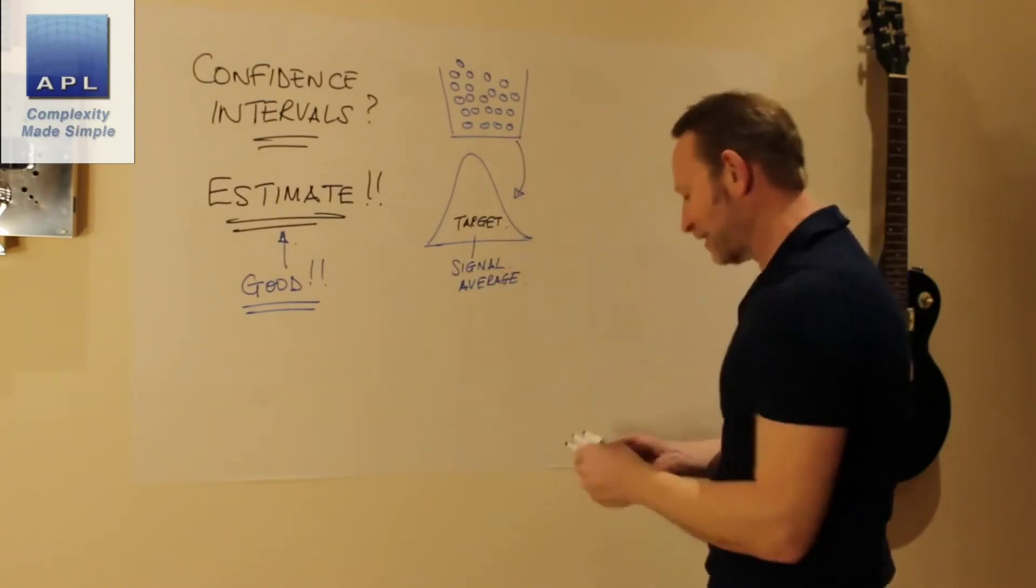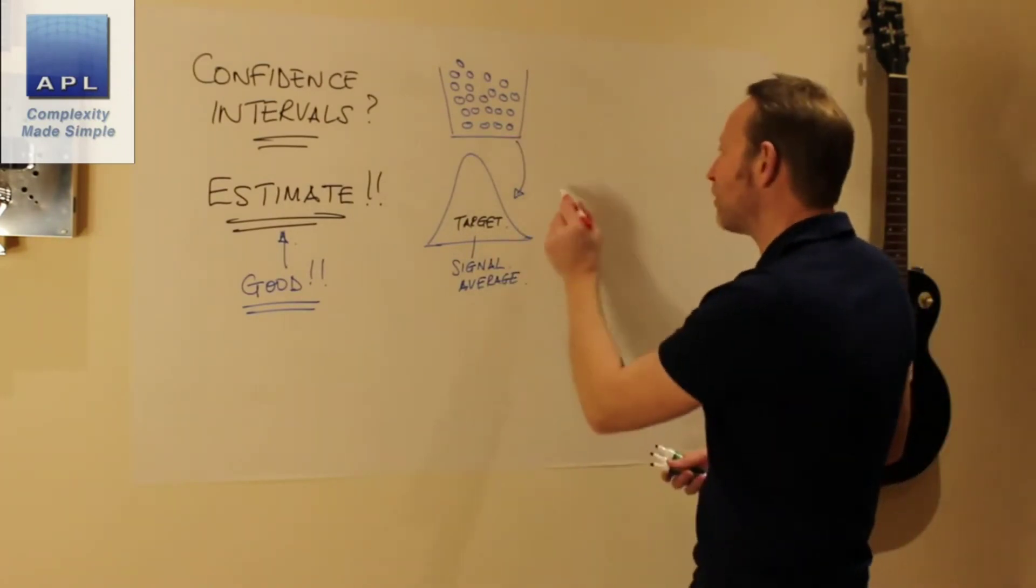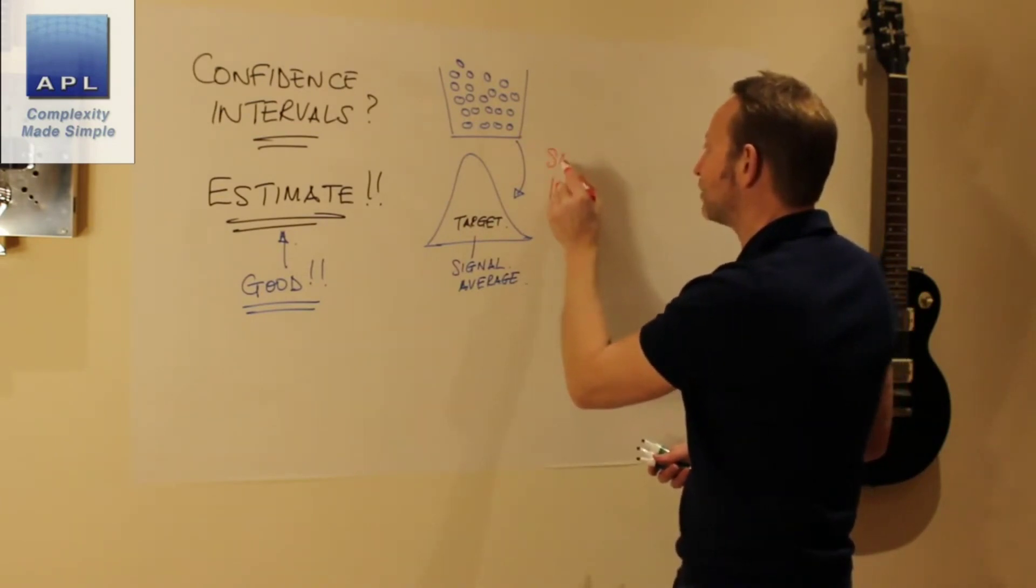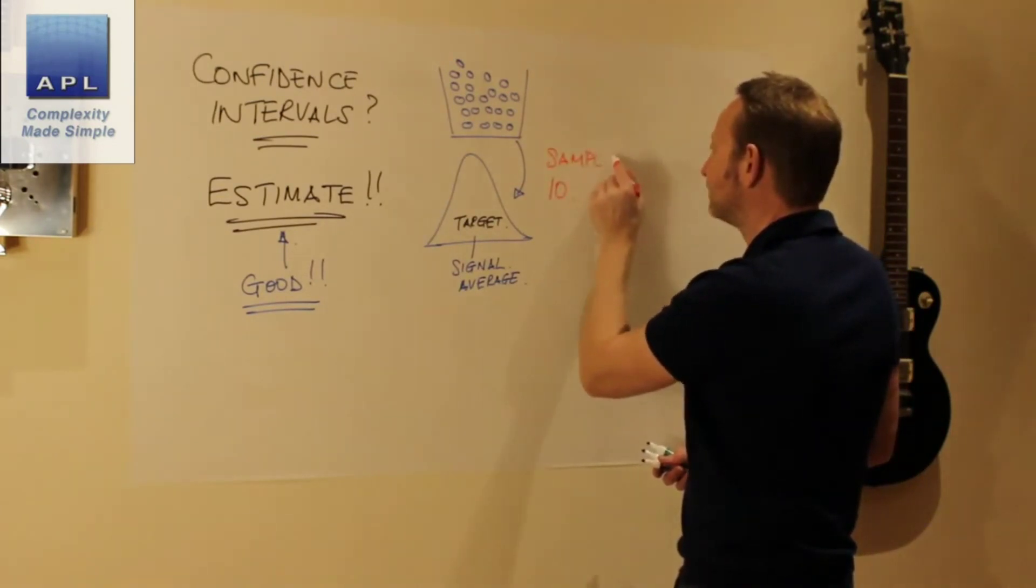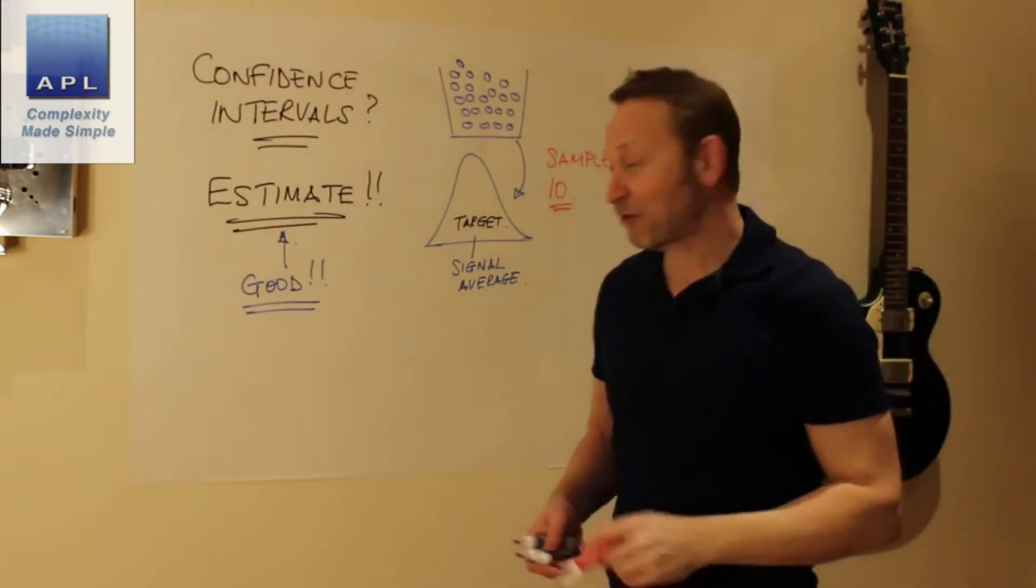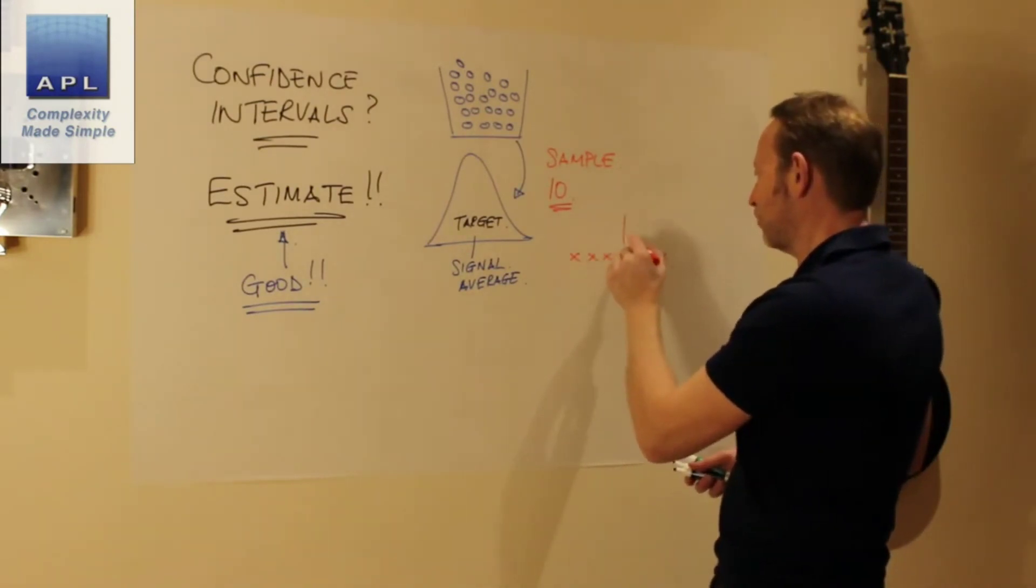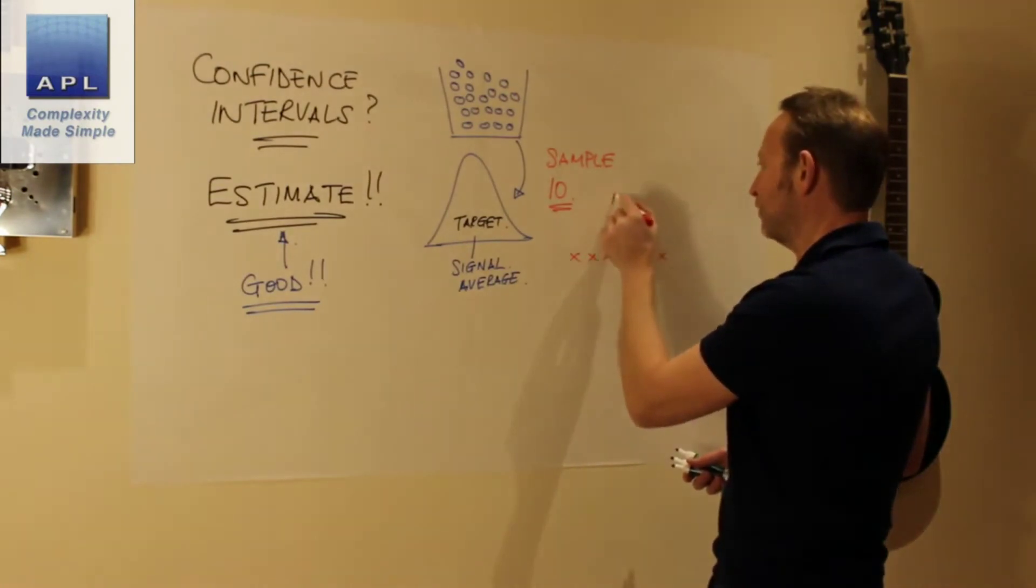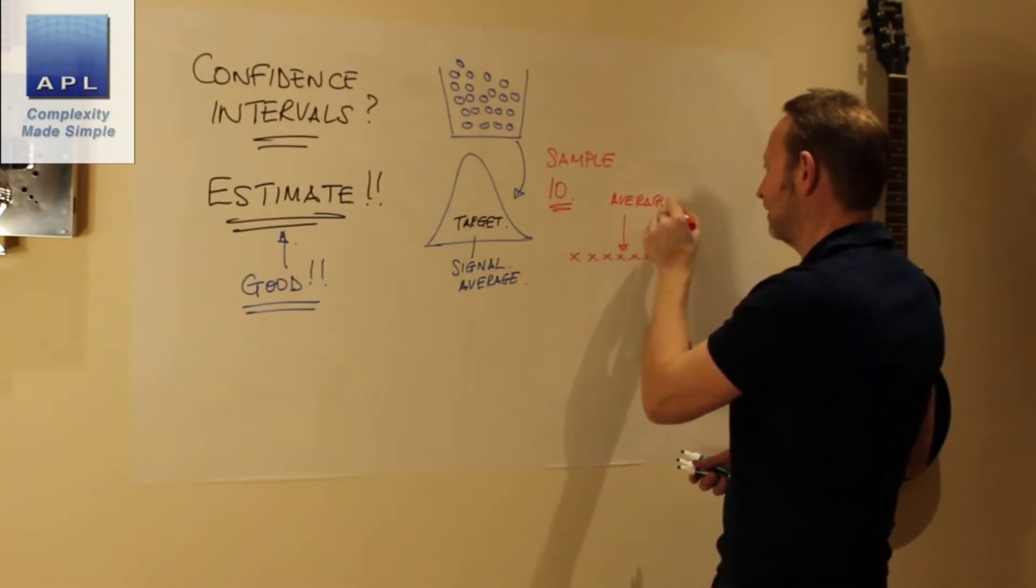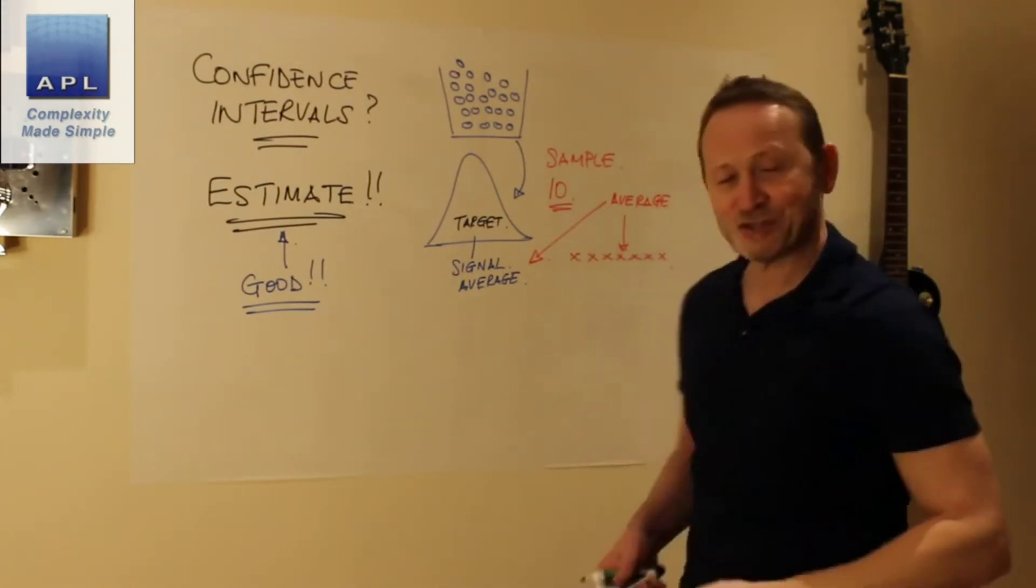So we take a sample. Let's say we don't want to work very hard and we only take a sample of 10. Now obviously what happens - we take out 10 and I'm going to work out the average from the 10.